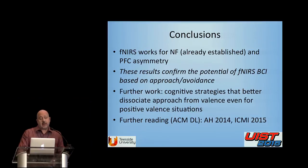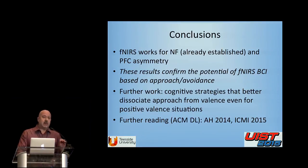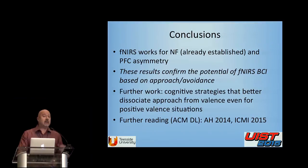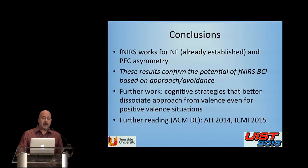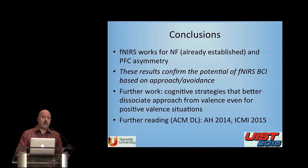In conclusion, this study suggests that fNIRS works for neurofeedback — though that has been established by others. What is new and interesting is that it's possible to get prefrontal asymmetry via anger, in a situation where approach is clearly de-correlated from valence. We have previous and ongoing studies using empathy, where approach is not de-correlated from valence. So it's important for the global validation of prefrontal cortex asymmetry as a BCI method that these anger-based results were obtained. In further work we'll look at cognitive strategies to relieve the approach-valence ambiguity when valence is positive.